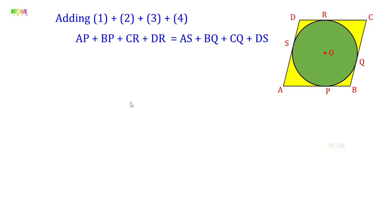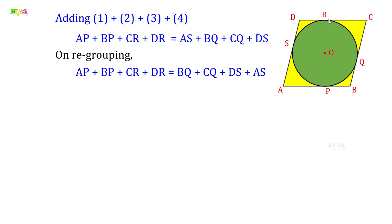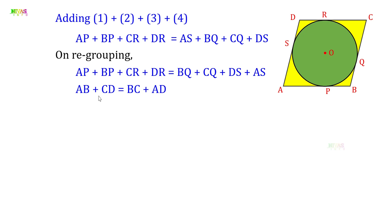On rearranging, we get AB + CD = BC + AD. Since ABCD is a parallelogram, AB = CD and BC = AD. Substituting CD = AB and AD = BC, we get AB + AB = BC + BC, that is 2AB = 2BC.